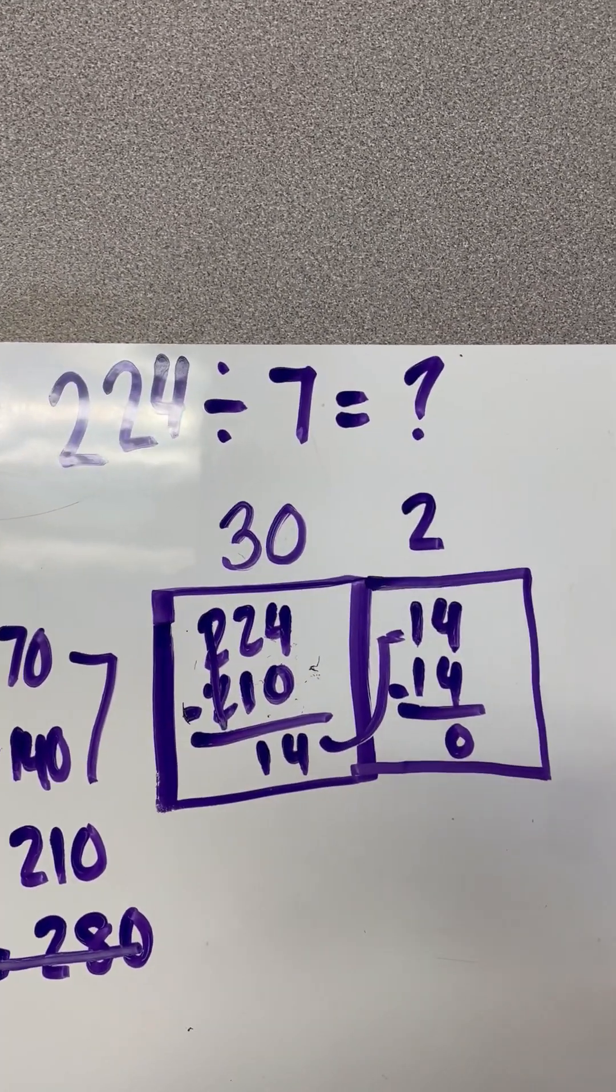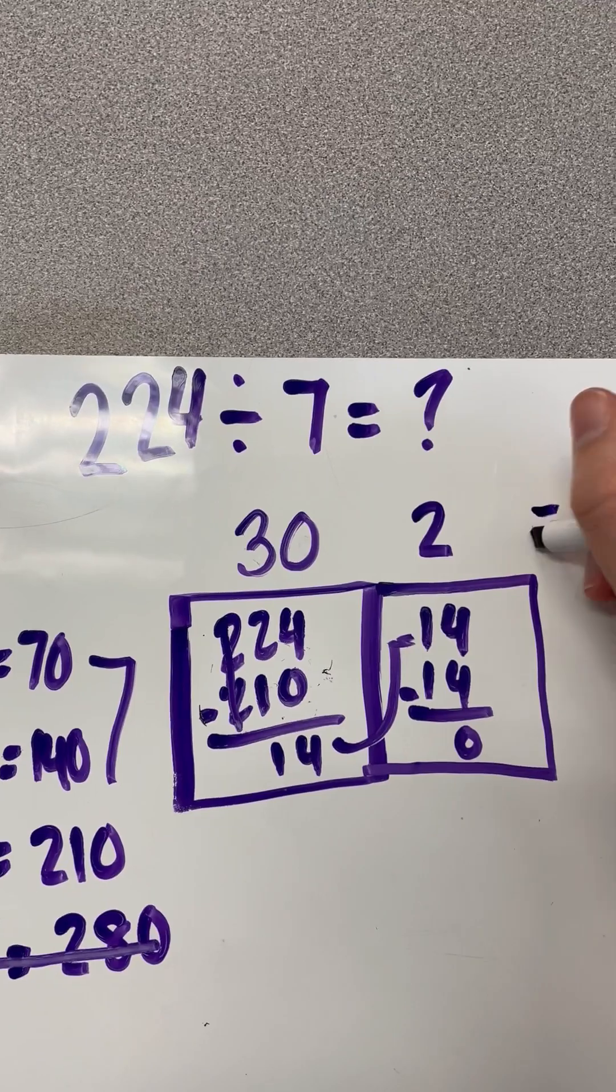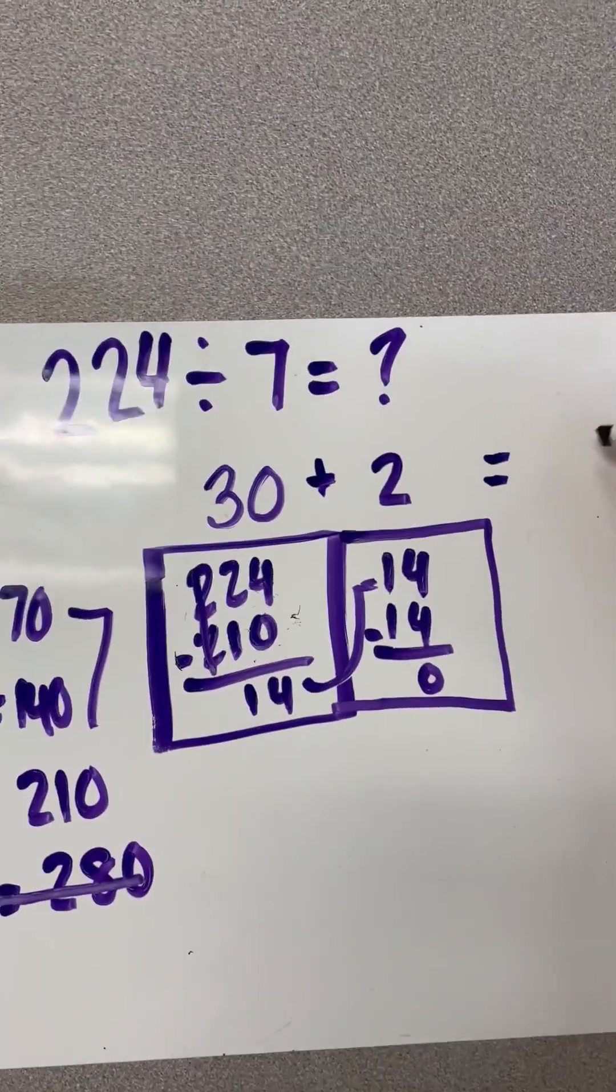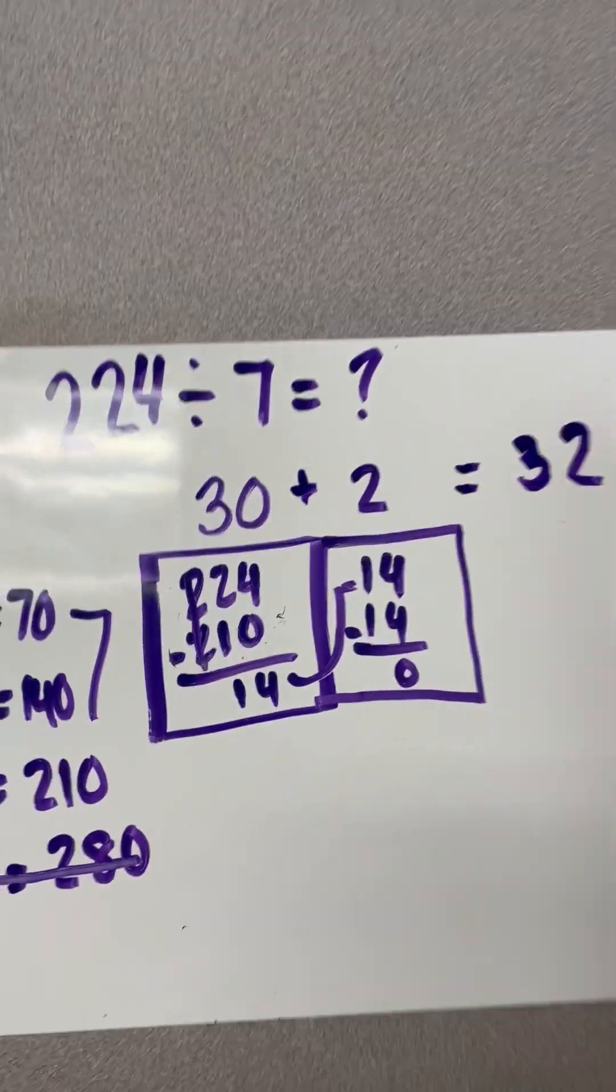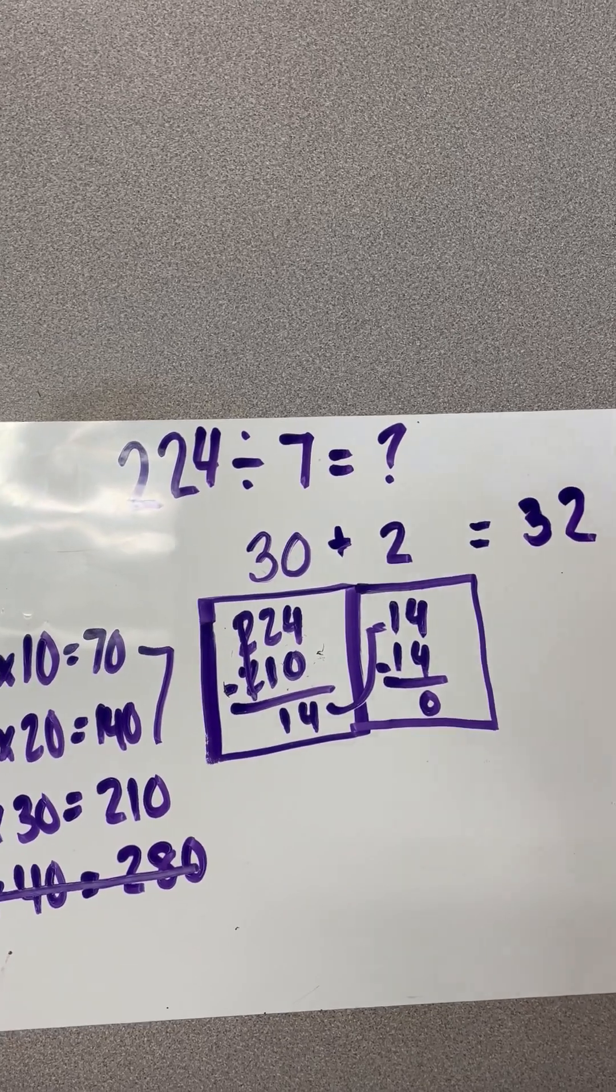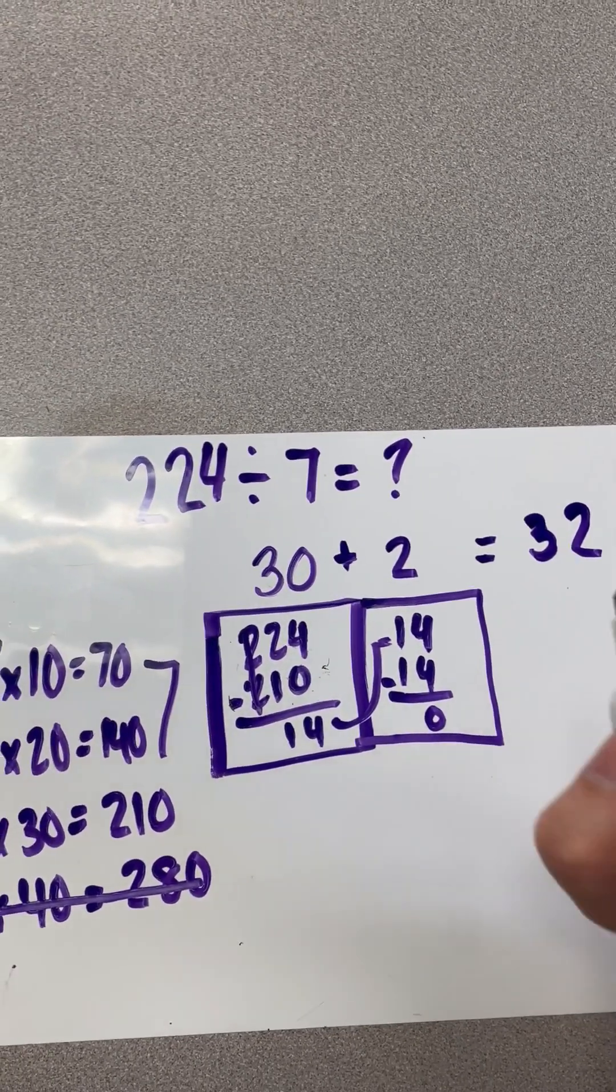I still have these partial quotients up here. And so I need to go ahead and add these together, and I would get 32. And so this would be the steps to take when trying to solve a division problem that does not have a remainder.